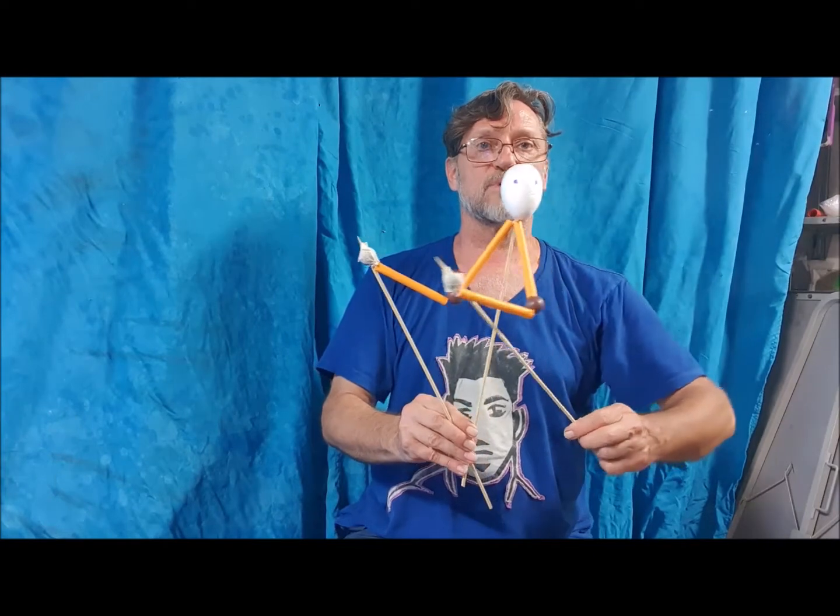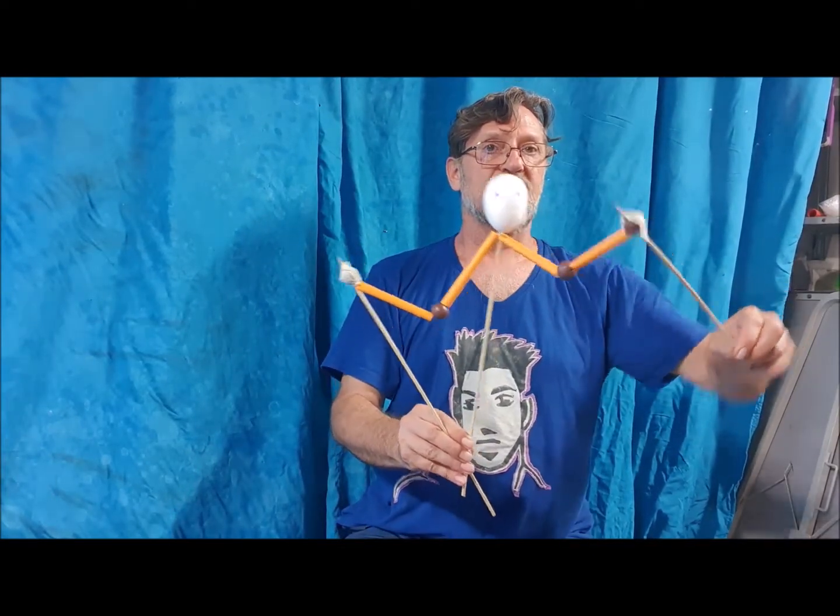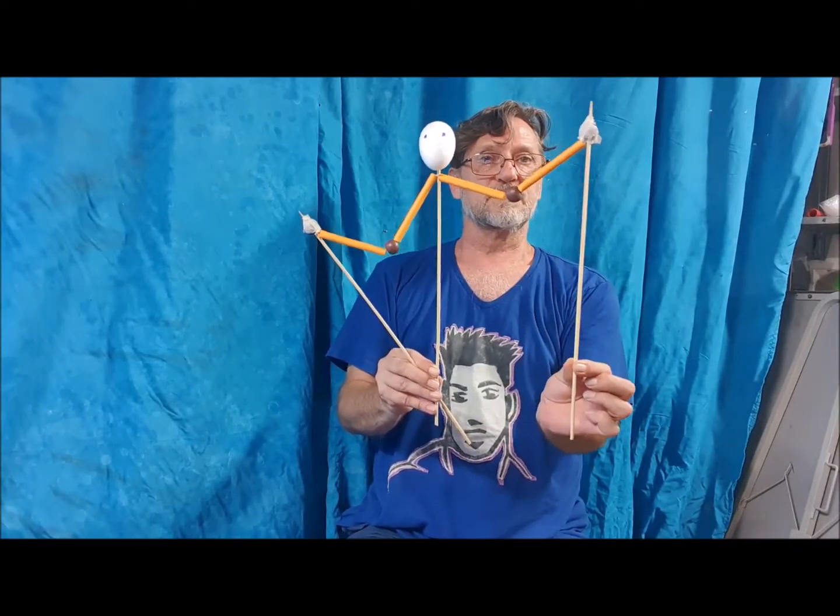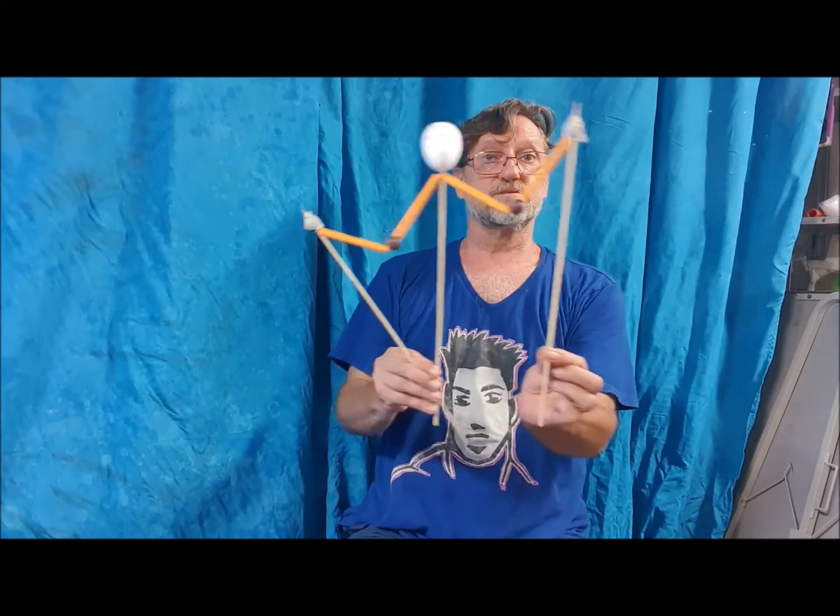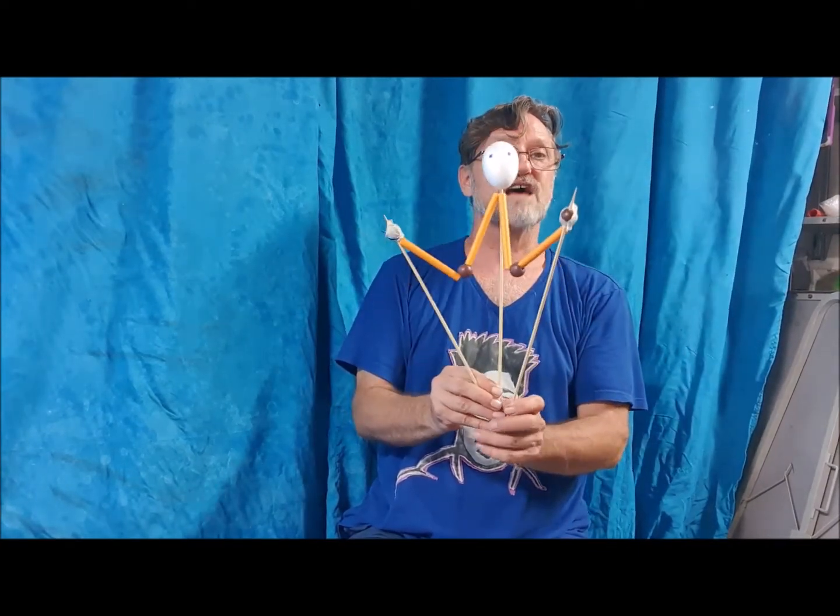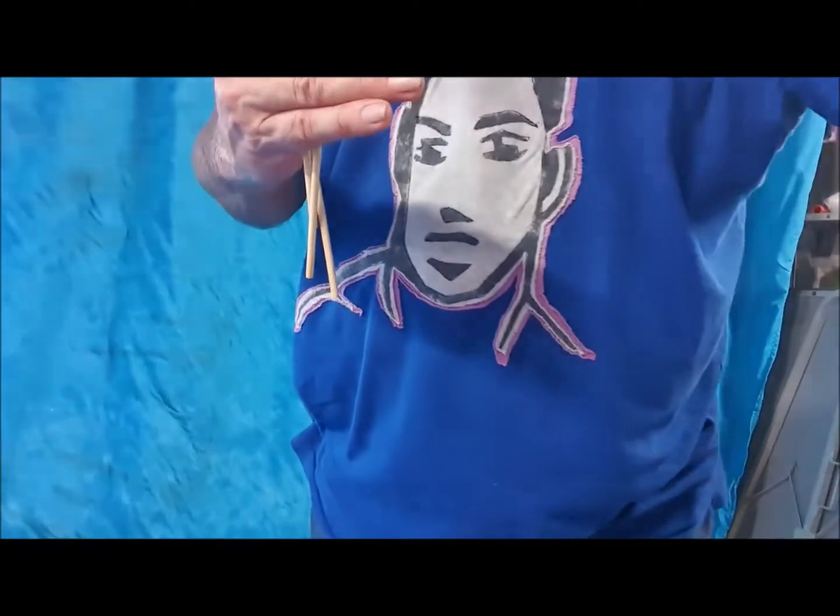Something you might want to think about doing is sewing a weight into the length of fabric at the center point of your arm so that it will drop. So it just gives you a little bit more natural movement to play with. And then the other thing is to paint the skewers that you're using, the two side ones, the ones you're going to have on the hands, I like to paint them black.